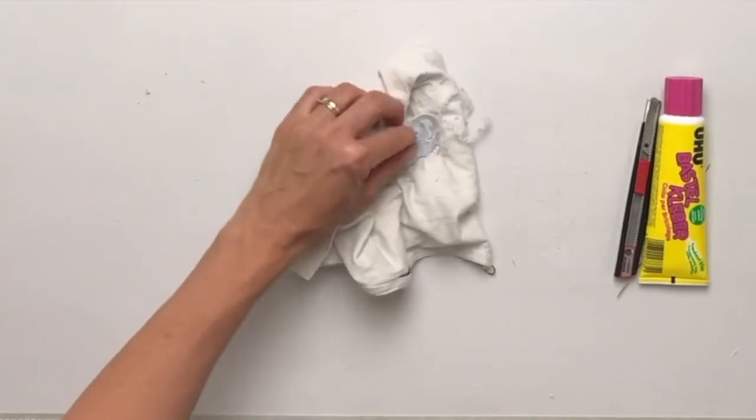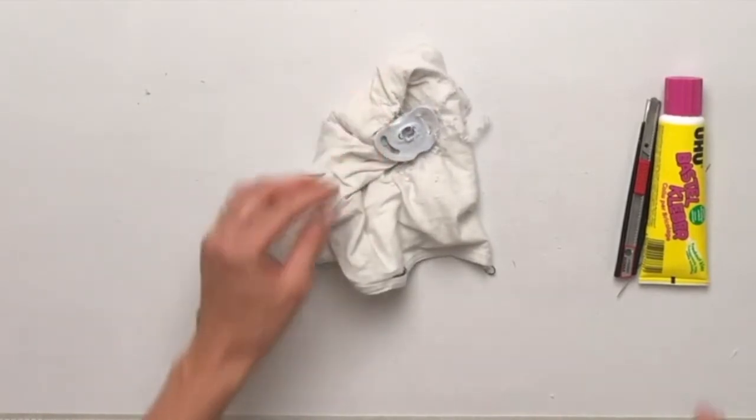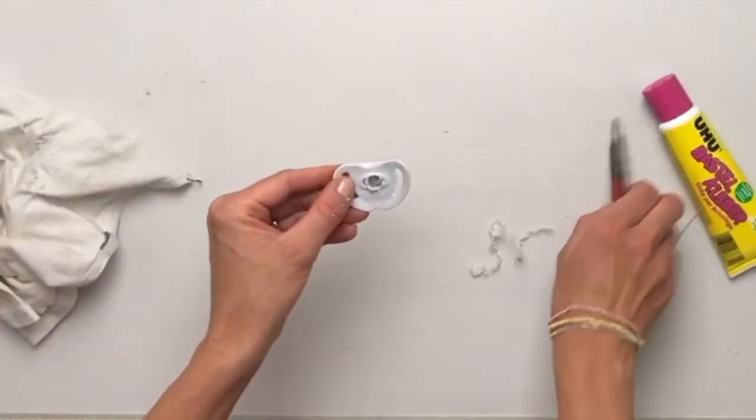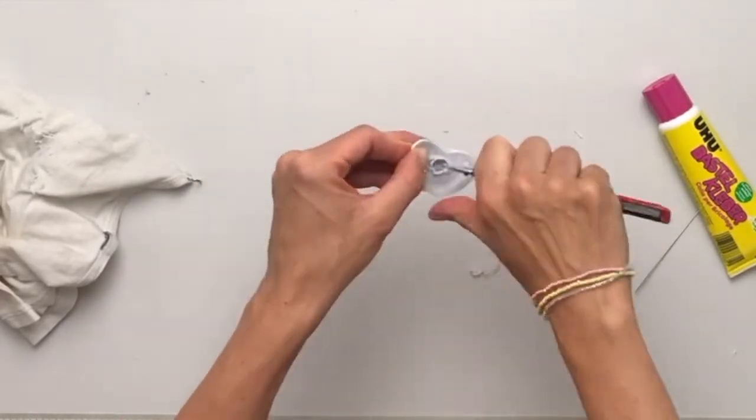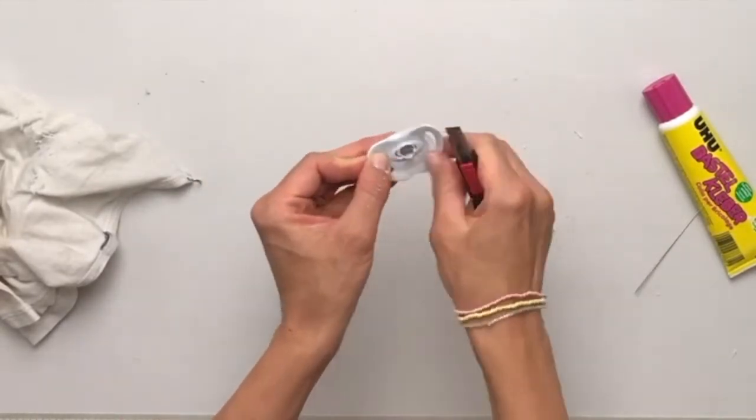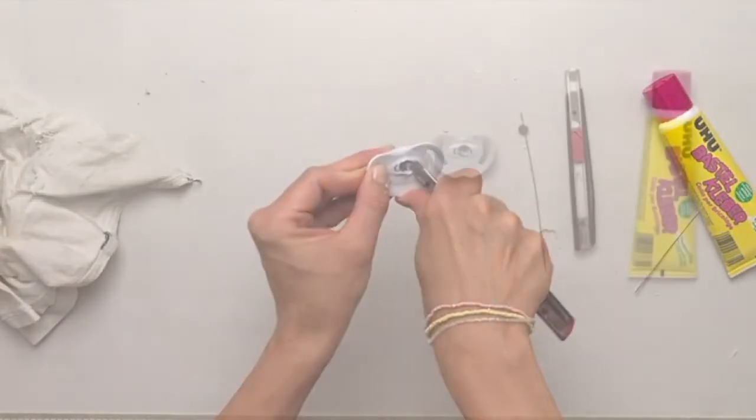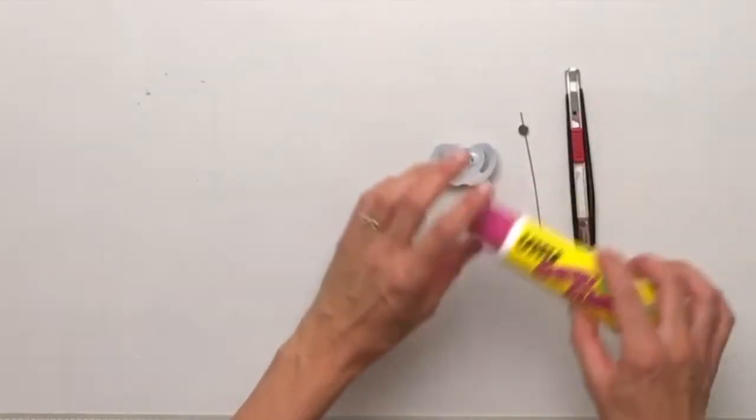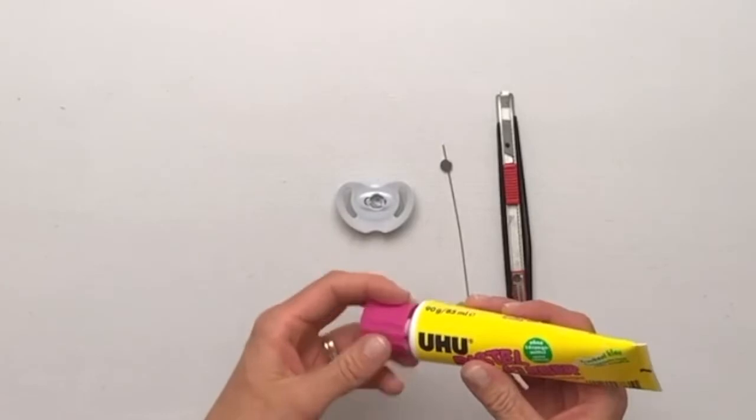For now I have my hole here. And now using a cutter I'm going to remove the plastic residue that's hanging over the edge. Now back to the pacifier. Drop a little drop into the hole here using the craft glue.